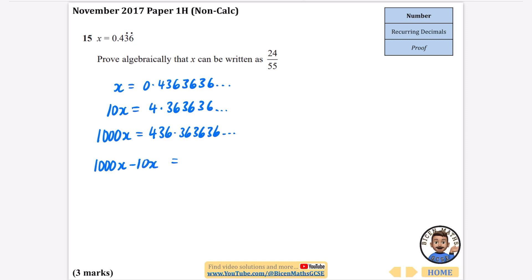You could do this whole question using recurring notation rather than writing out the three sixes. When I subtract them and do 1000x take away 10x, that would be the same as 436 take away 4. It's going to just be all of this bit take away all of this bit, and 436 take away 4 is 432. So I get that 990x equals 432, which means that x is 432 over 990.